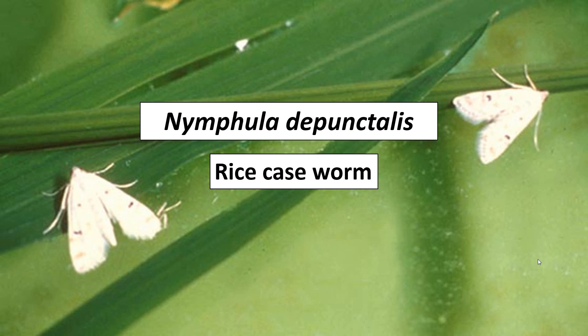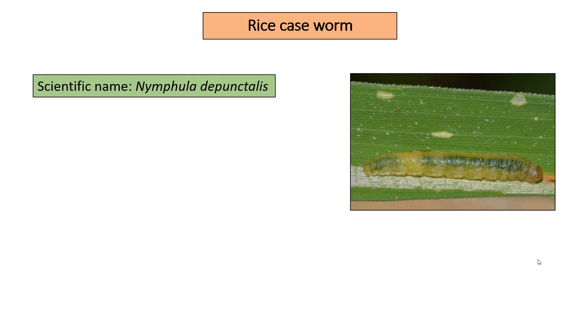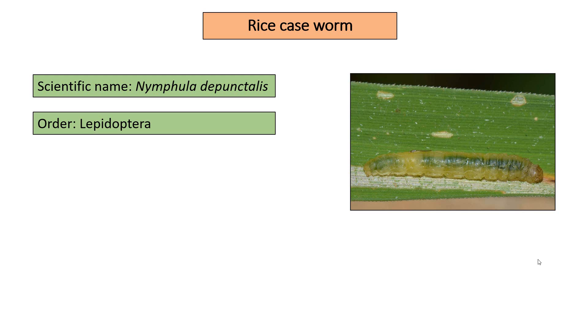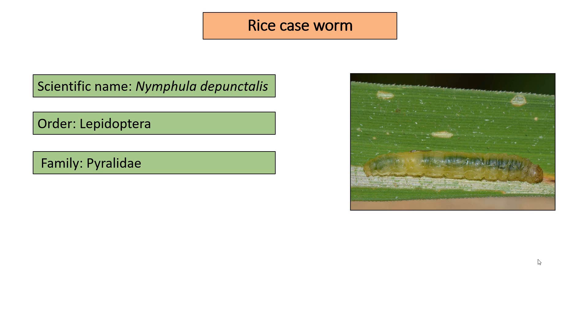Hello everyone. In this presentation we will be talking about Nymphula dipunctalis, rice case worm. It is scientifically known as Nymphula dipunctalis. It belongs to the order Lepidoptera and family Pyralidae. Its primary host is rice crop.